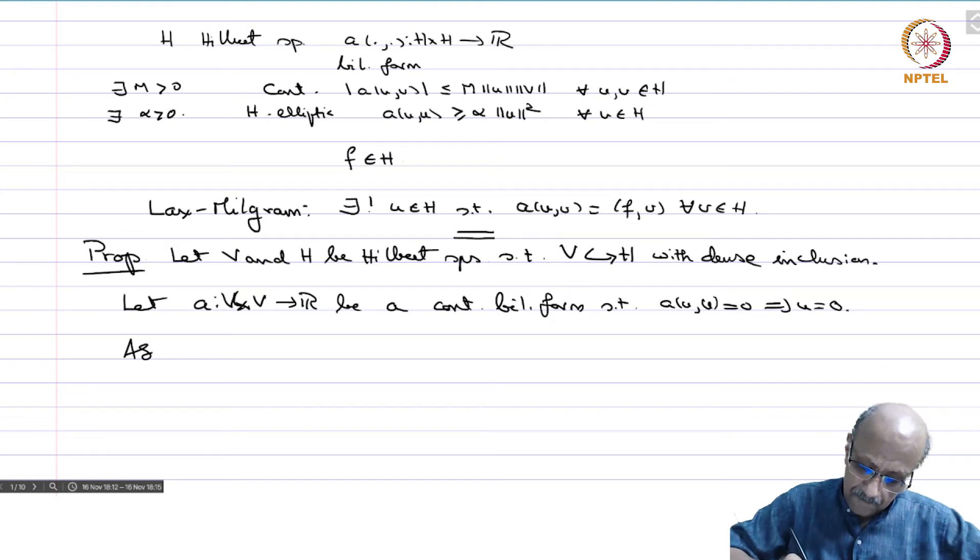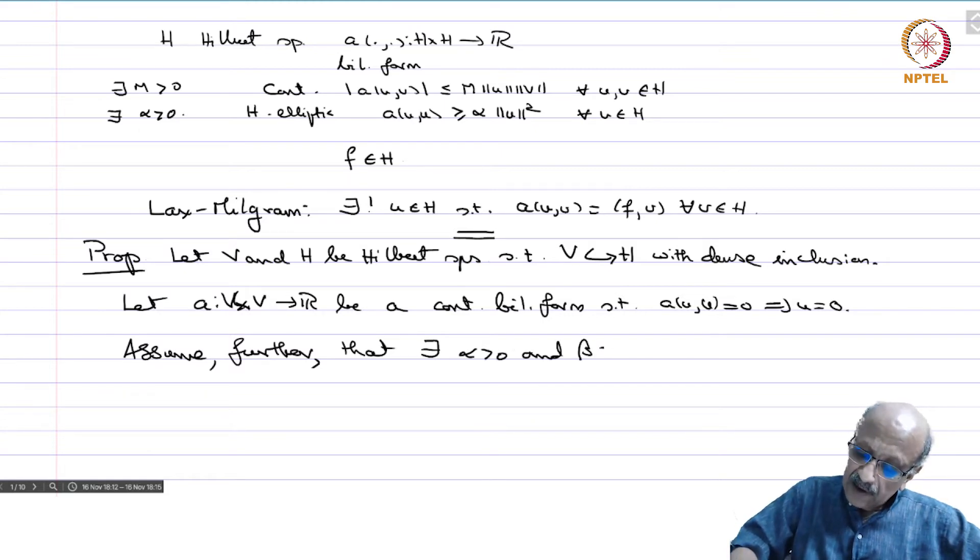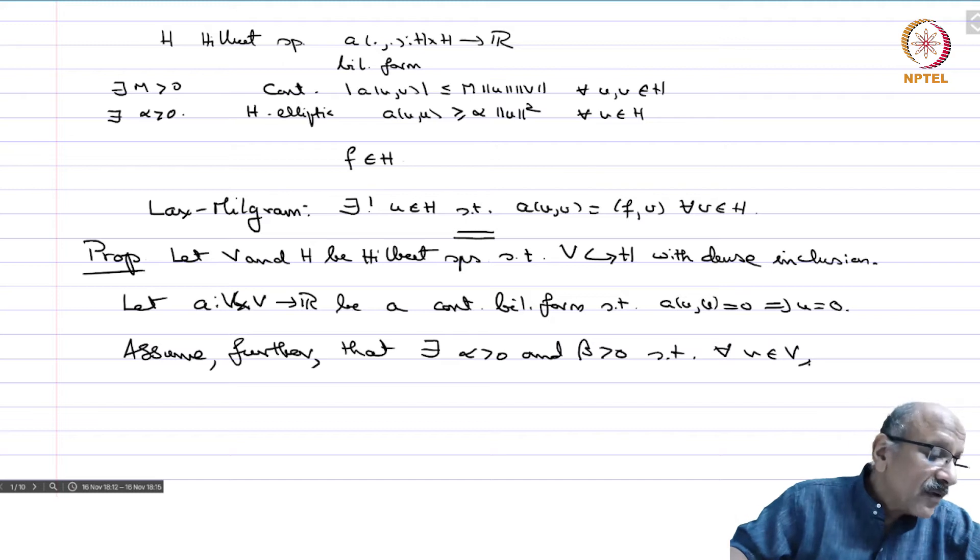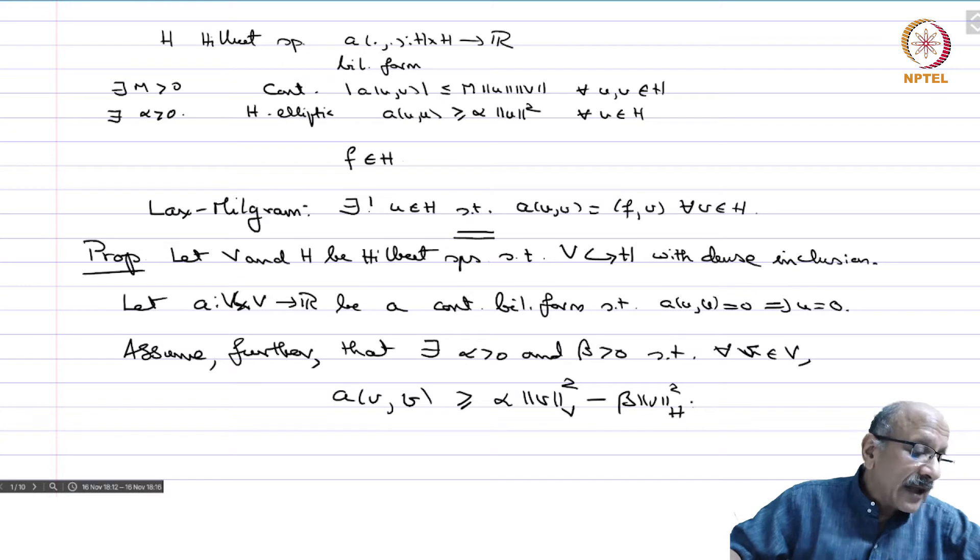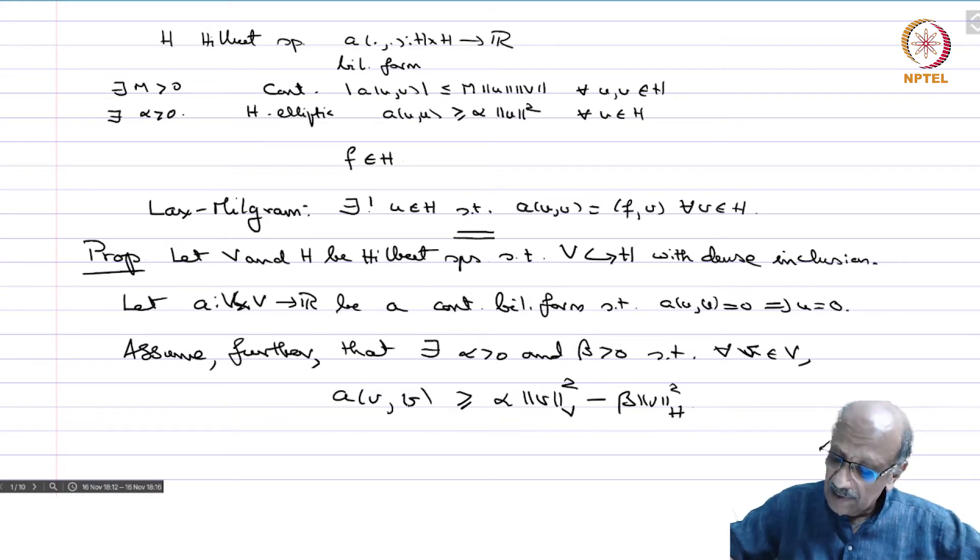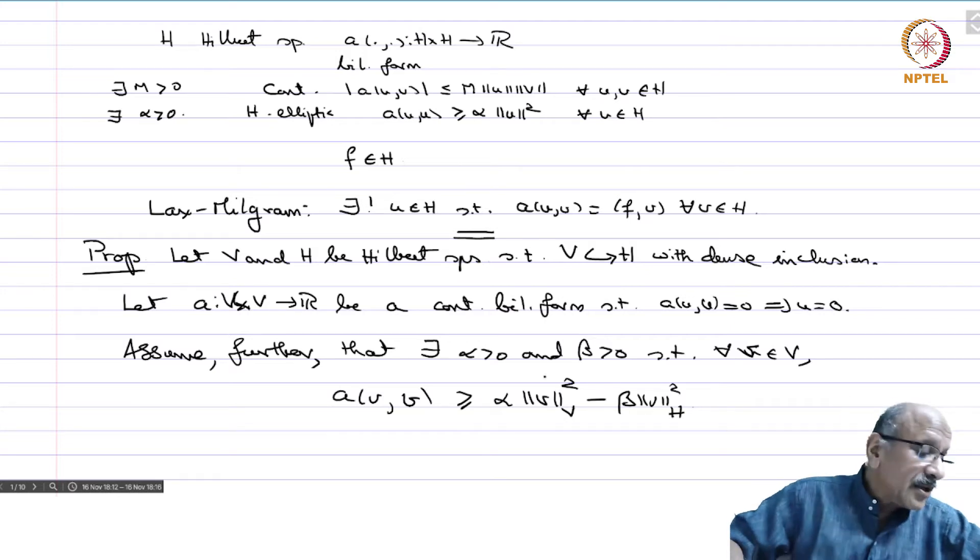Assume further that there exists α > 0 and β > 0 such that for every v in V, A(v,v) ≥ α||v||²_V - β||v||²_H. There's a negative term here, so this is not elliptic at all, but this inequality is good enough.